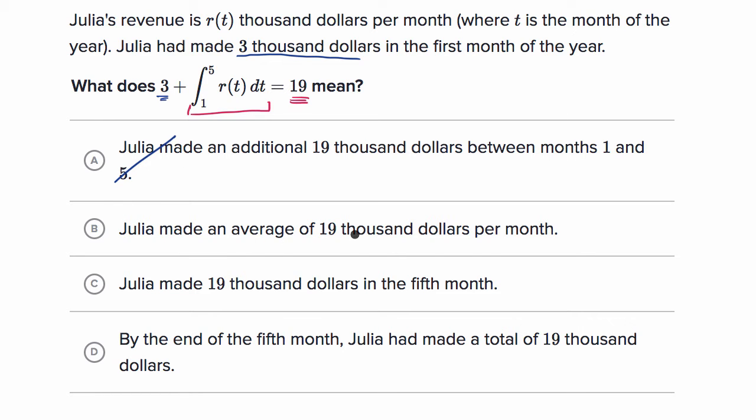Julia made an average of $19,000 per month. Well, that's also not right because we just said from the beginning, from time zero all the way until the fifth month, she made a total of $19,000. Not the average per month is 19,000.